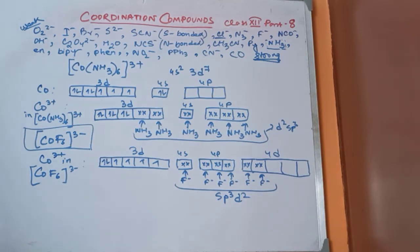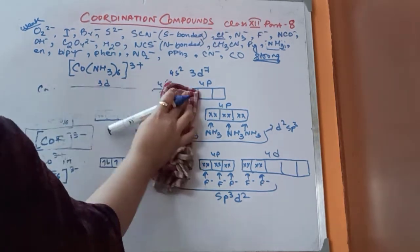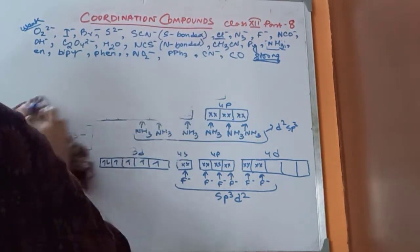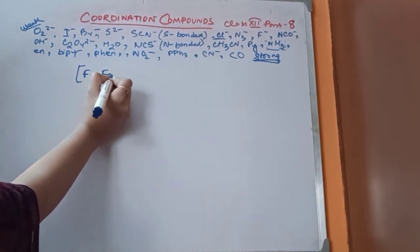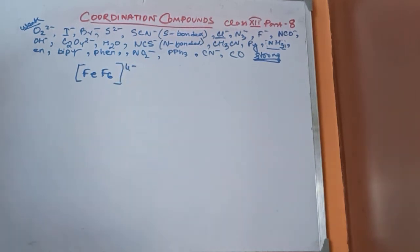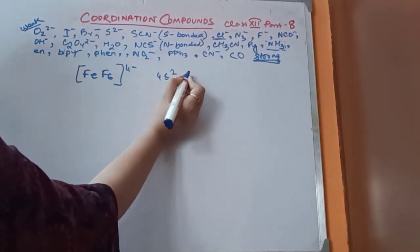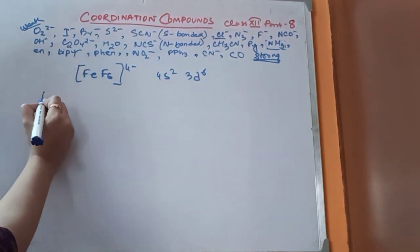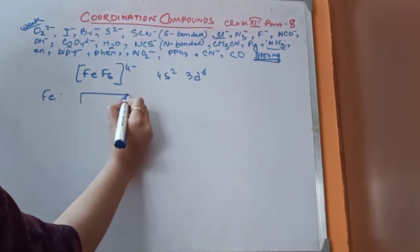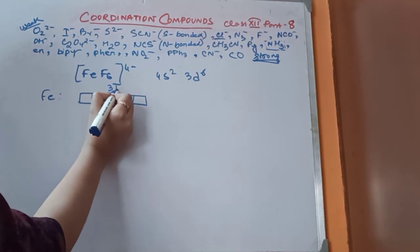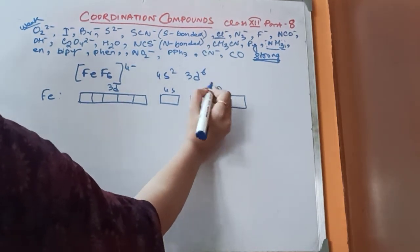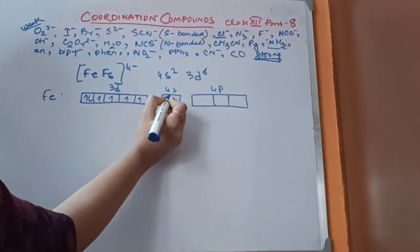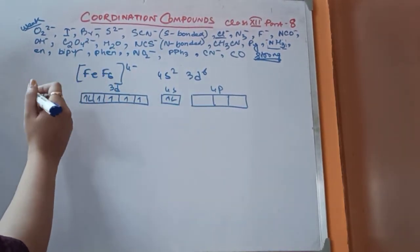Let me show another example of an outer orbital complex using the fluoride ligand. The complex is FeF6 4 minus. Iron has the configuration 4S2 3D6. The oxidation state of iron in this complex is plus 2, meaning the 2 electrons from 4S are removed.